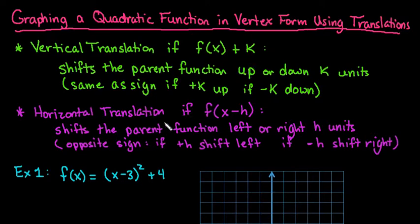A horizontal translation occurs if it's inside the parentheses. If it's inside, then it always shifts left or right. The reason it does the opposite is because it's what makes it zero inside, and that's where the turn happens.